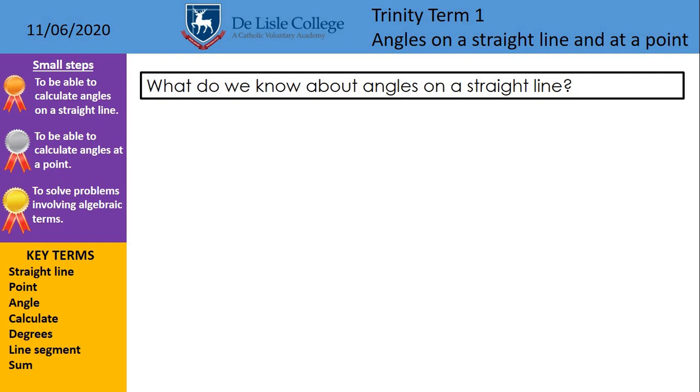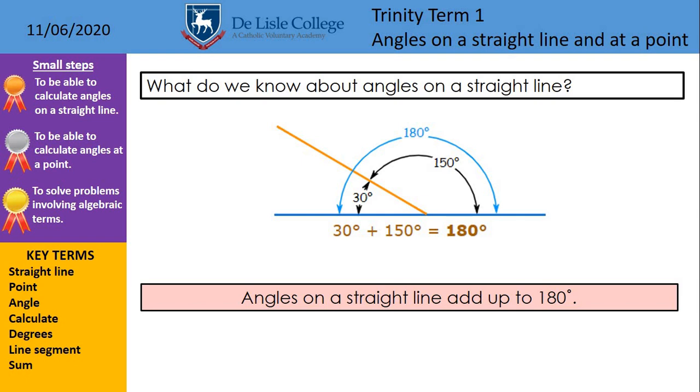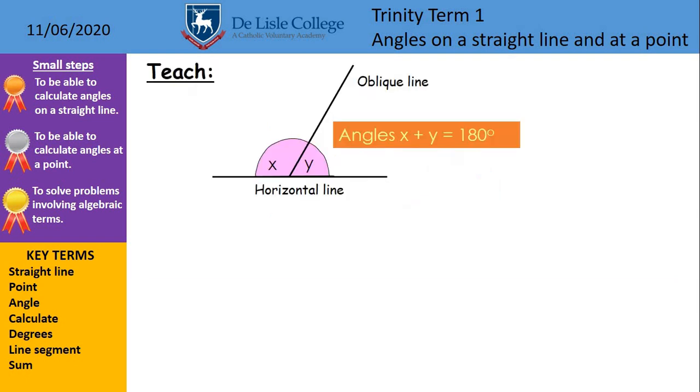What do we know about angles on a straight line? And this is, you're going to need to write down with that diagram, angles on a straight line add up to 180 degrees. So there's two angles on there, one's 30, one's 150, and they will always make 180 degrees together. We know angles x plus y equals 180 degrees, because that is angles on a straight line.